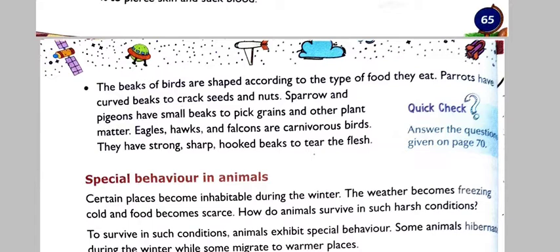Eagles, hawks and falcons are carnivorous birds. They have strong, sharp, hooked beaks to tear the flesh of their prey.